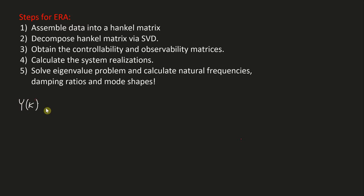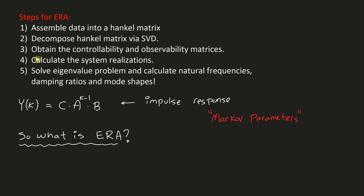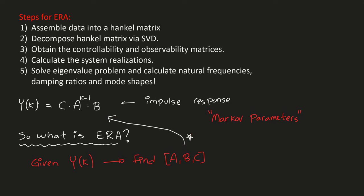The next thing we should talk about is what an impulse response of a system is. Using the system realizations — the C, A, and B matrices — we can express the impulse response for a discrete-time system. This is often referred to as a Markov parameter; if you go to conferences people say Markov parameter all the time, and this is really what it means — it's a process where the current step depends on the previous step. The ERA is the idea of taking our output results, expressed as Y(k), and identifying the A, B, C, D matrices given that the impulse response relationship holds.